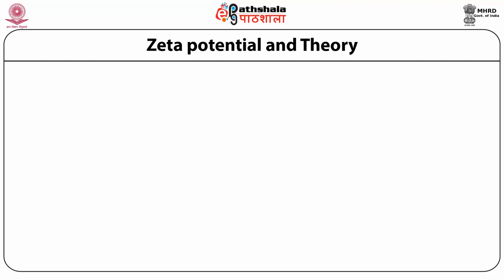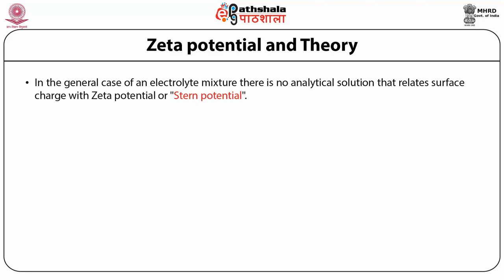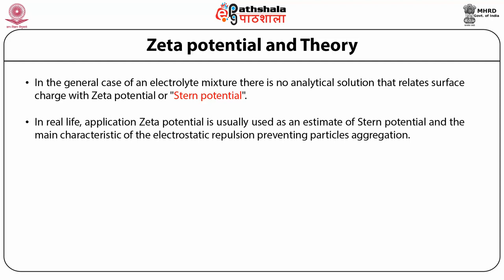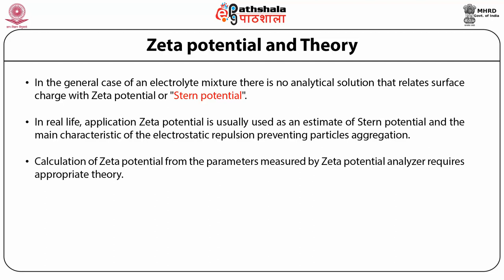After discussion of total membrane potential, zeta potential and streaming potential, we will discuss how to calculate streaming potential and zeta potential and what theories exist for it. In the general case of an electrolyte mixture, there is no analytical solution relating surface charge with zeta potential or streaming potential. In real life, zeta potential is usually used to estimate the streaming potential and the main characteristic of electrostatic repulsion preventing particle aggregation. Calculation of zeta potential from parameters measured by zeta potential analyzers requires appropriate theories.